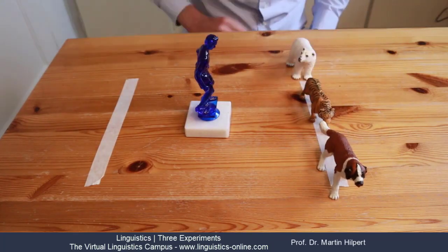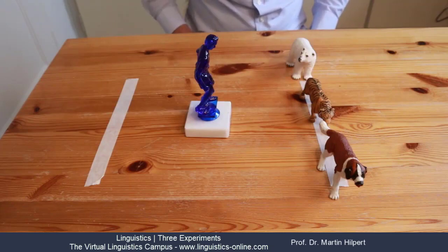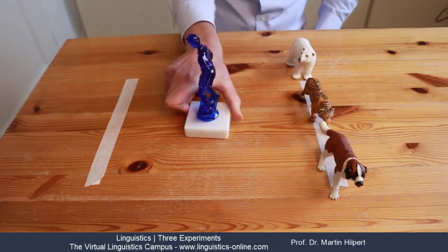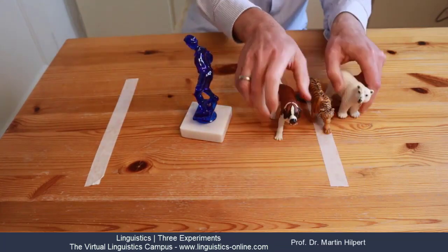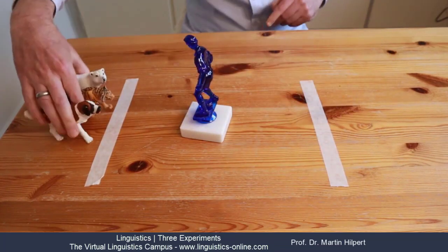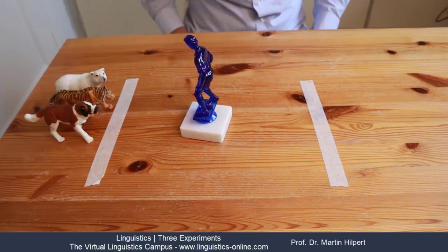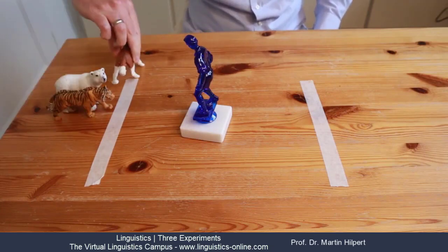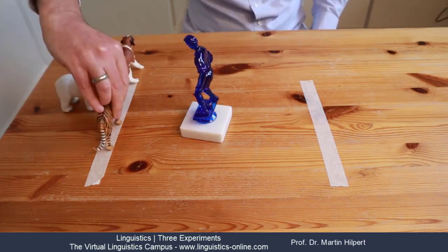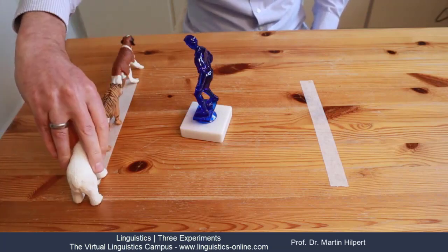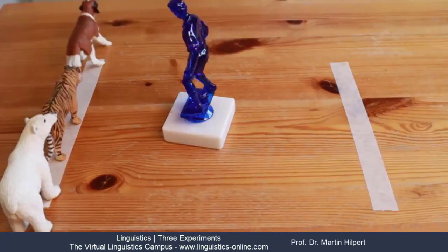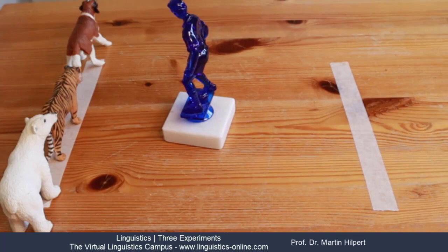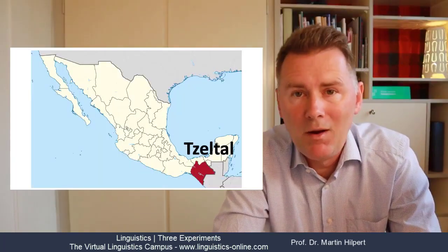Okay here's the twist. The experimenter asks you to switch around to another table. They give you the animals and they say put the animals in a row just like before. What do you do? If you're like me you do this. You start on the right with the dog followed by the tiger and the polar bear. The experiment has been carried out with speakers of Dutch and with speakers of Japanese and they do exactly the same thing and that seems only logical. Why would anyone line up the animals in a different way?